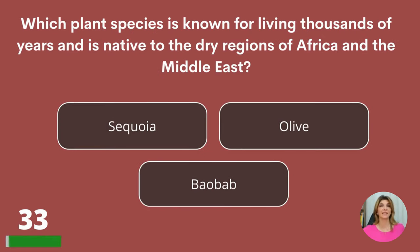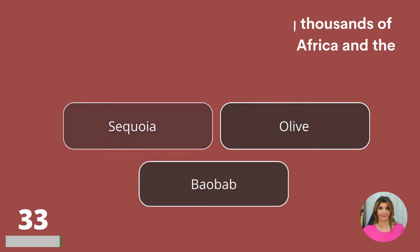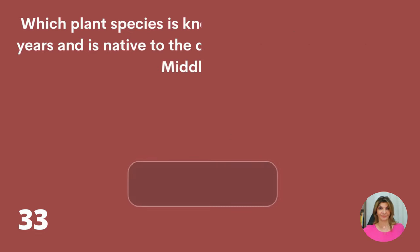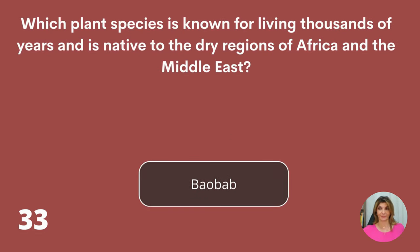Which plant species is known for living thousands of years and is native to the dry regions of Africa and the Middle East? Sequoia, olive, or baobab? Baobab.